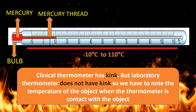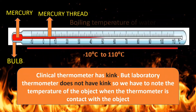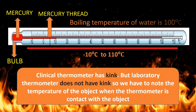This is the basic difference between the clinical and the laboratory thermometer. The boiling temperature of water is 100 degrees Celsius, so there are different temperatures which the laboratory thermometer can measure within the range of minus 10 degrees Celsius to 110 degrees Celsius.